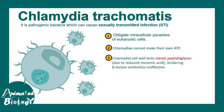Chlamydia has a peculiar feature in terms of the cell wall. The classical peptidoglycans are lacking and they have reduced muramic acid. That is why beta-lactam antibiotics are ineffective on Chlamydia — this is very important from a clinical point of view.